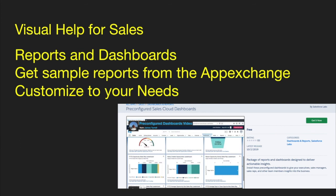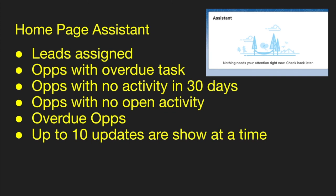If you need visual help for sales, reports and dashboards are a great tool. You can always get sample reports from the AppExchange and then customize them to fit your needs — pull down the pre-configured Sales Cloud dashboards, look at all the dashboards and reports, and configure them for your organization. And then there's the homepage assistant. On your homepage, it'll help you with leads assigned, opportunities, overdue tasks, ops with no activity in the last 30 days, ops with no open activity, and overdue opportunities. It can show up to 10 updates at a time.